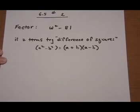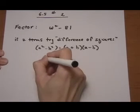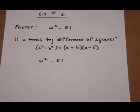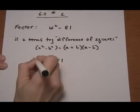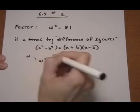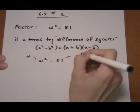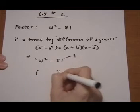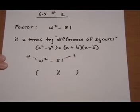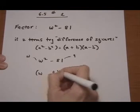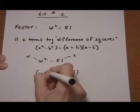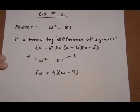So let's do that with W squared minus 81. The square root of W squared is W, and the square root of 81 is 9. So we feed that into the binomials — W and 9 — putting the square roots in and giving them opposite signs. And that would be the answer.